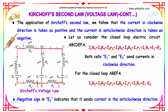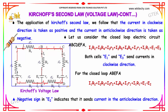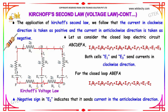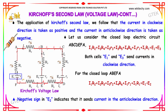Consider the closed loop electrical circuit A, B, C, D, E, F, A. Applying Kirchhoff's second law to this loop gives: I1·R2 + I3·R4 + I3·R3 + I3·R5 + I4·R6 + I1·R1 = E1 + E3. The algebraic sum of the product of current and resistance in the closed circuit equals the total EMF supplied by E1 and E3, both driving current in the clockwise direction.